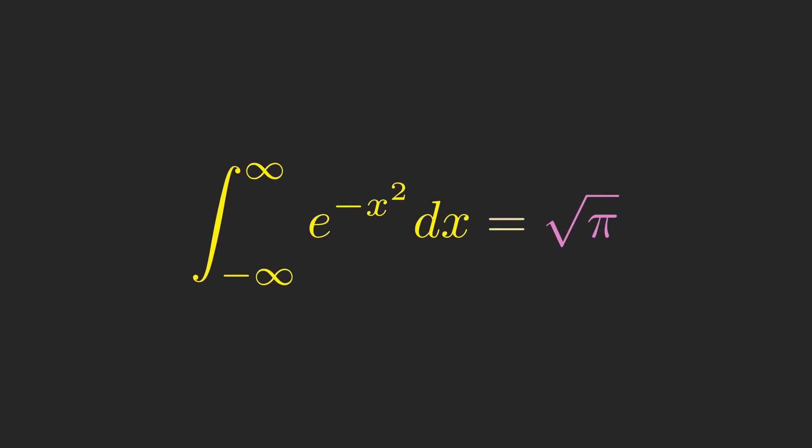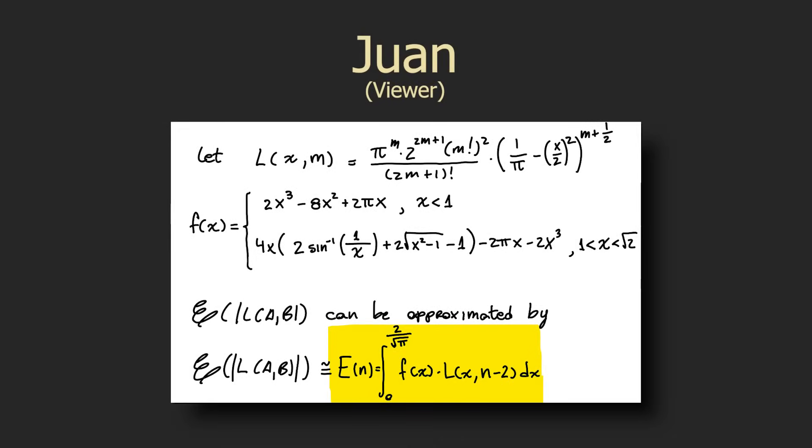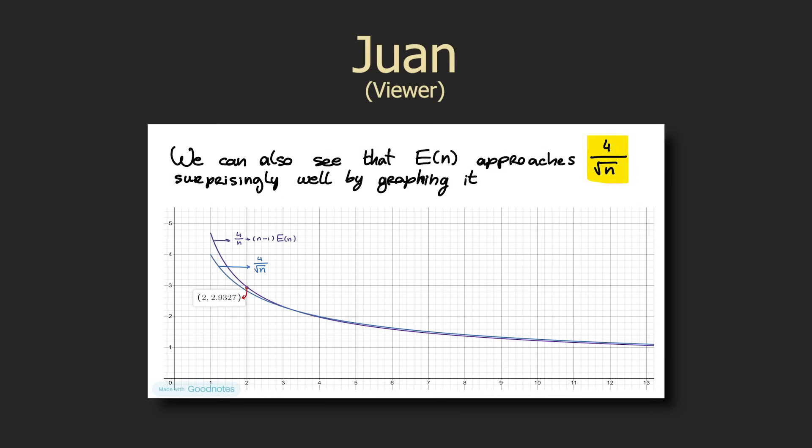Here's where I, and I think most viewers, stopped with the integration approach as I've described it. Although I did see an attempt to approximate the 5 dimensional integral with a single dimensional one, which seems to also very closely align with 4 over square root of n by the looks of this graph.